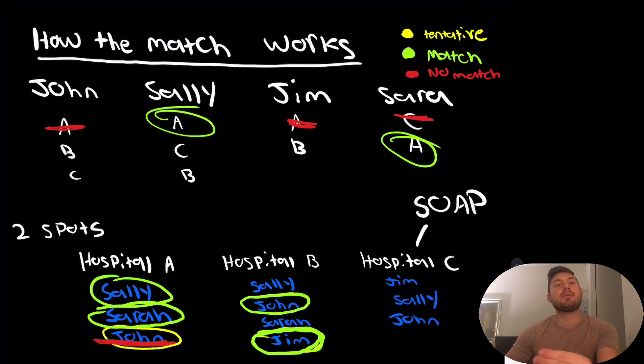And so what happens is usually a couple days before the actual match, which is in March, it's March 18th this year, the applicants that matched will find out they matched, but they won't find out where. And the applicants that didn't match will also be notified that they can enter and are eligible for the SOAP so that they have a couple of days to try and match into a program.